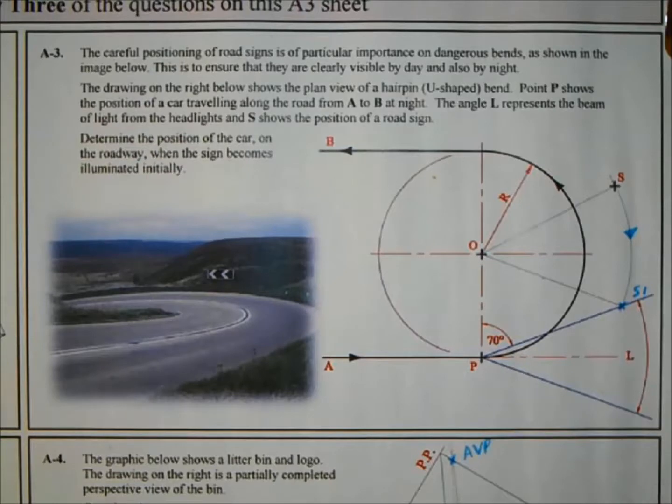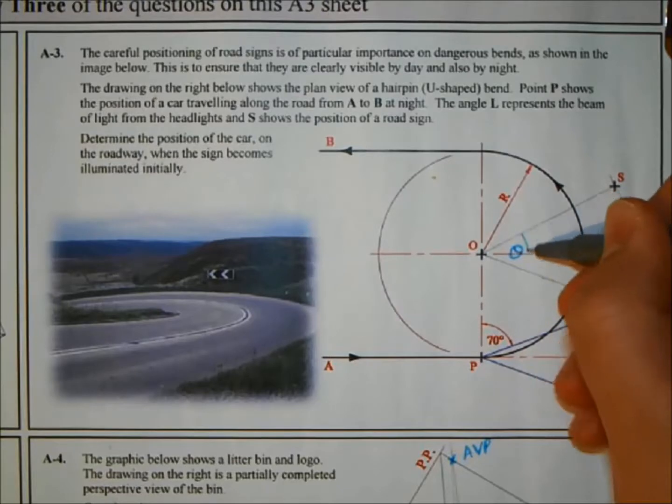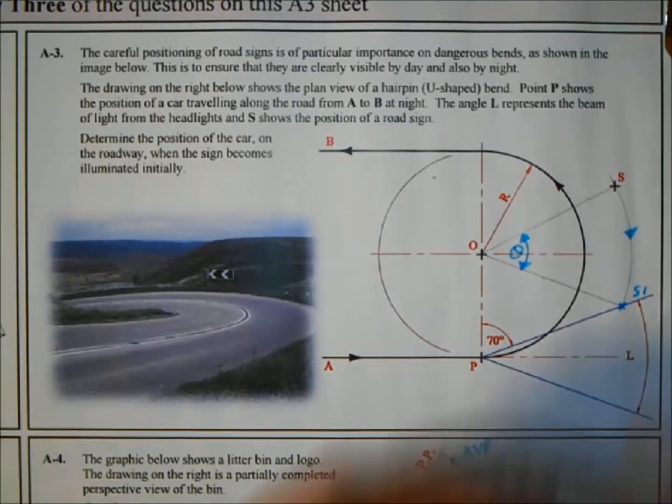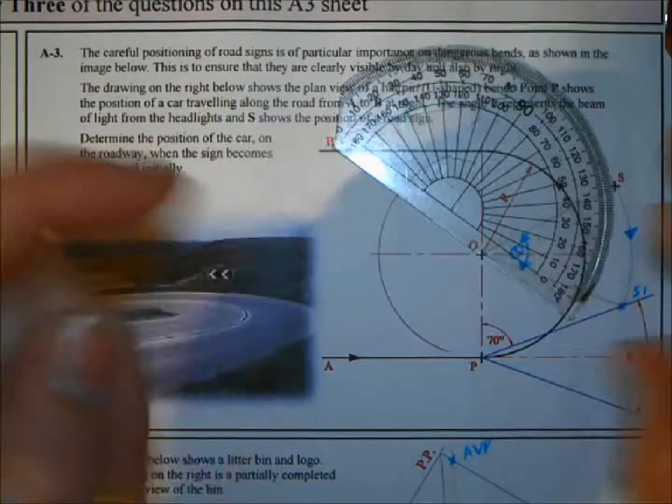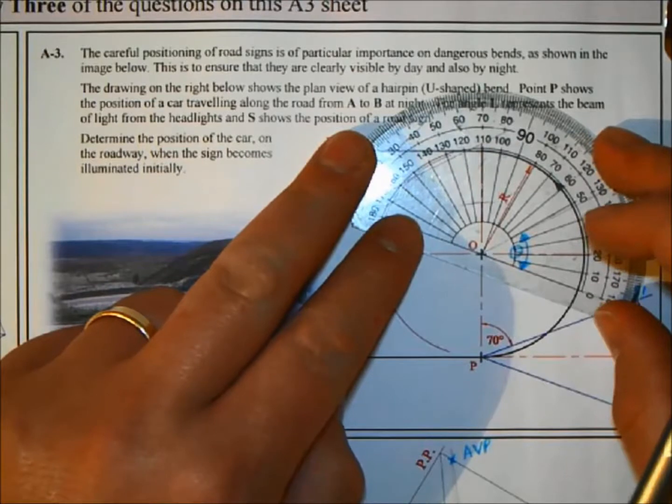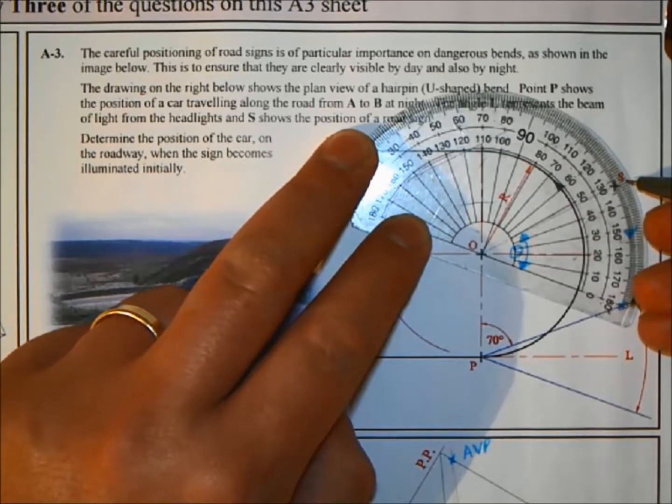What that's giving me now is an angle in here, the angle to which I rotated point S. Let's measure it to be safe and see what the angle was. So it is 47 degrees.